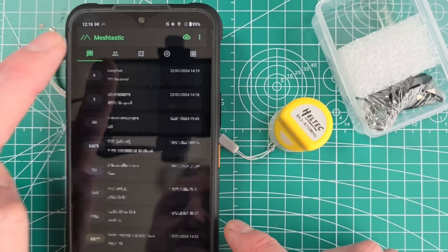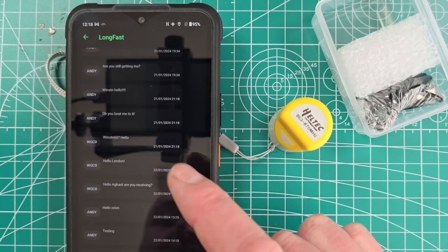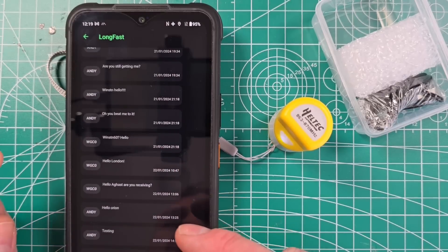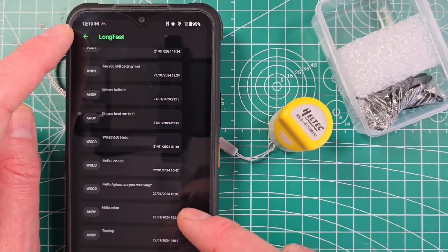But yeah, from here we can see it's working. We can go to the public channel here and you can see there's been some other conversations happening on here. It's a bit like the old CB radio days. You can just chat to people on a public channel.